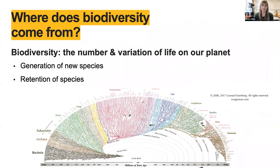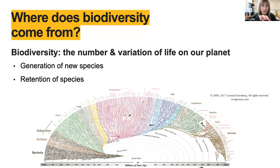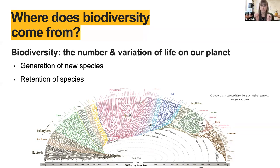Let's start with a motivating question that governs a lot of our work, which is basically: where does biodiversity come from? We'll start with a definition of what biodiversity is, which I'll define as the number and the variation of species that live on our planet. Biodiversity comes about in basically two main ways. The first is through the generation of new species, which you can see on that tree of life plot at the bottom, where you have individual lineages that are branching into two lineages, two lineages into four lineages, for example. At the bottom, you can see the origin of life, and then all the tips represent species that are living today on our planet.